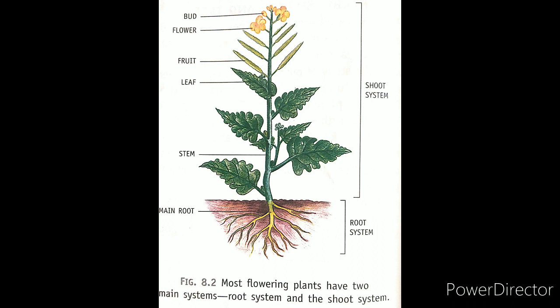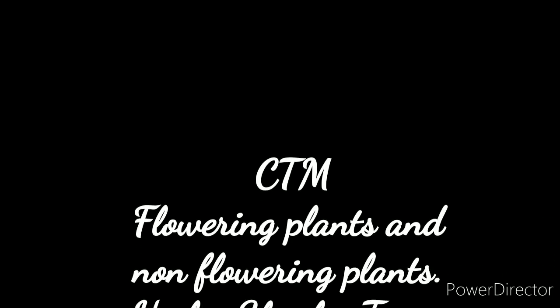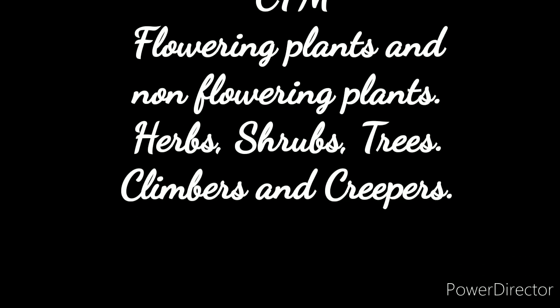So the root system and shoot system are the two main parts of a plant that perform different functions. The root system consists of a main root with branching roots, while the shoot system consists of stem, leaves, buds, flowers, and fruits. In the next video we will cover the root system in detail. Until then, practice the differences between flowering and non-flowering plants, herbs, shrubs, trees, and climbers and creepers.